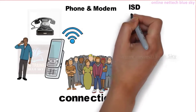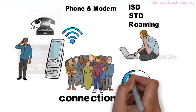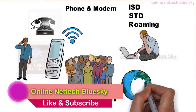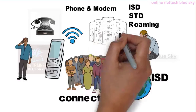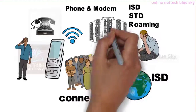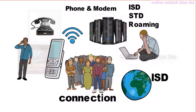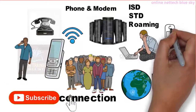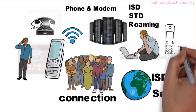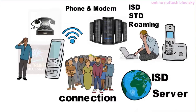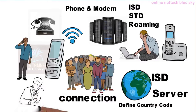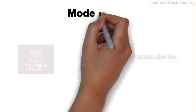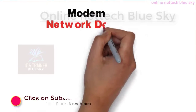Phone means you can control by your collector technology. ISD, STD, and roaming technology was created in the world for connectivity — international calling, STD calling, local calling, and roaming calling. It is one type of server technology. Modem technology means router technology. A lot of people do not know what is a server. A server is one type of technology facility, and every country has a country code in modem technology and phone technology — for connection like Skype.